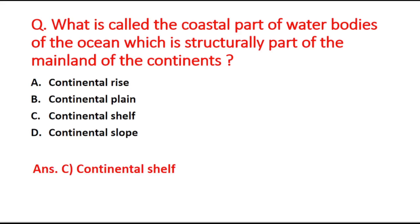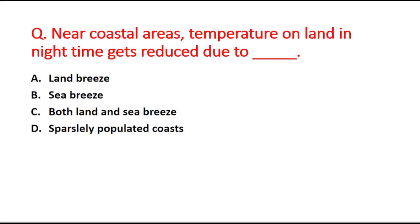Next question: Near coastal areas, temperature on land in the nighttime gets reduced due to — option A is land breeze, B is sea breeze, C is both land and sea breeze, and D is sparsely populated coast. The right answer is option A, land breeze.